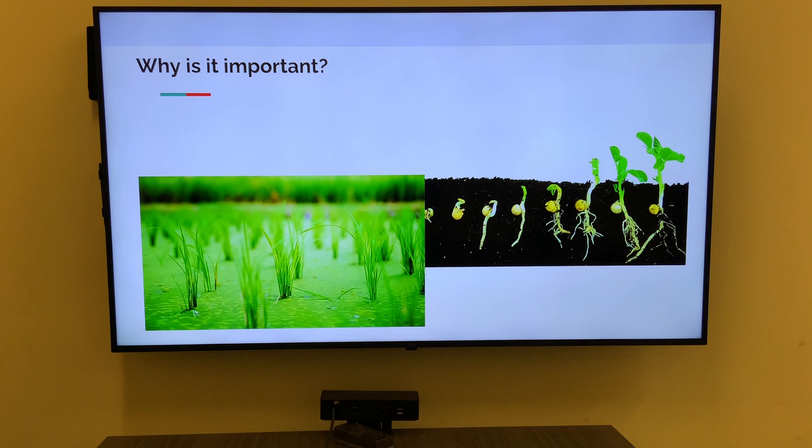During germination, stored nutrients within the seeds are mobilized and used to fuel early growth and development. As the seedling emerges from soil, it must quickly establish a root system and start producing leaves in order to begin photosynthesis and produce energy. Without successful germination, the plant will not be able to generate the energy it needs to survive and grow.